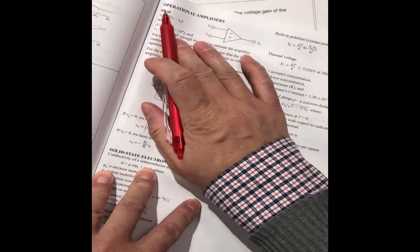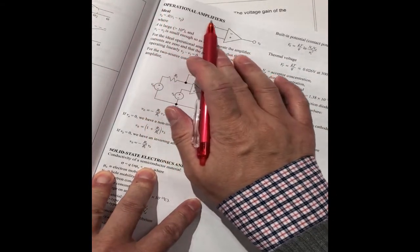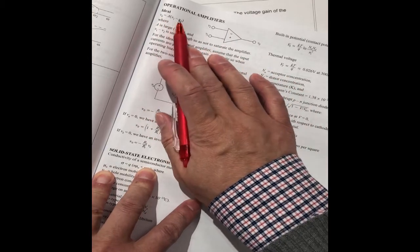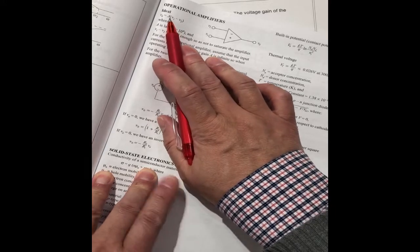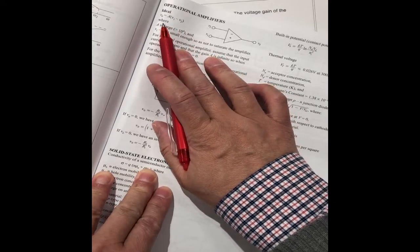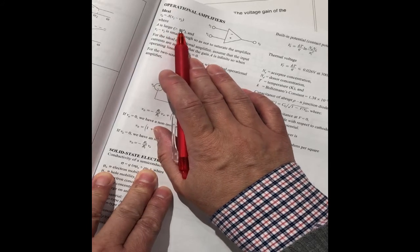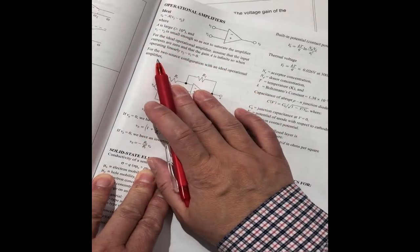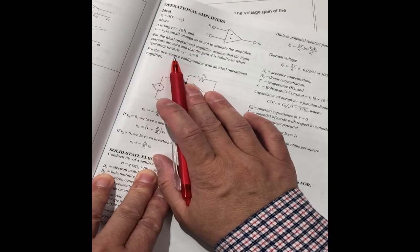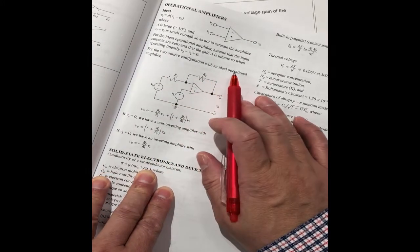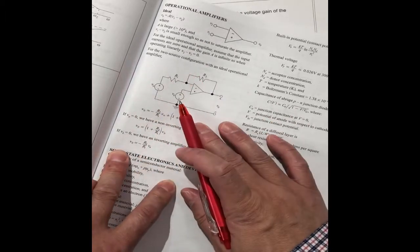This is about operational amplifiers. This is the ideal case. This is the formula for the output with the input. They have N with the amplifier. A is larger than 10, less than 10 to the fifth power. So for the two source configuration with the ideal operational amplifier is this one.